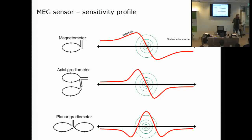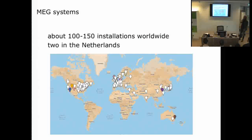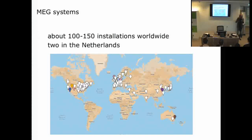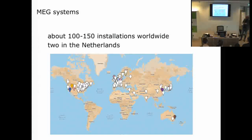There are about 150 MEG systems in the world, and two in the Netherlands. MEG is expensive and narrow in application — unlike an MRI scanner, which can be used for brains, knees, and clinical purposes. An MEG system costs roughly the same as an MRI — about one and a half million euros — but can only be used for functional recordings on human subjects. By contrast, it would be impossible to count how many EEG systems exist — probably 100,000 or so.